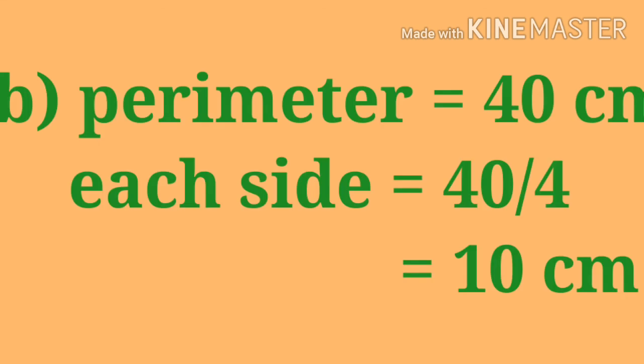In part b, perimeter is given as 40 centimeter. Dividing 40 by 4, each side equals 10 centimeter. Please try to do the remaining questions, and if there is any difficulty or doubt, you can ask me. Thank you, students.